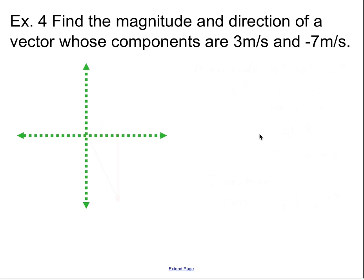Last example, find the magnitude and the direction of a vector whose components are 3 meters per second and negative 7 meters per second. I didn't say x and y, I didn't write that in the problem. The x component is the 3, the y component is the negative 7. So 3 is the x component, positive. And then starting at the tip of the arrow for the x component, we want to go down 7, so negative 7. We have these labeled.